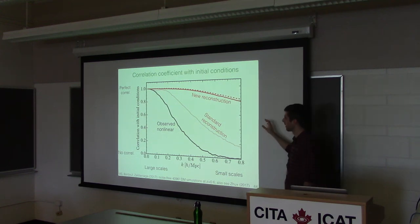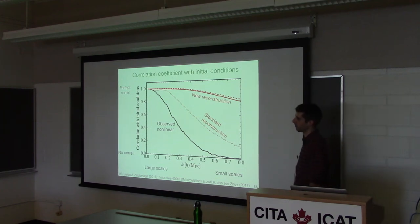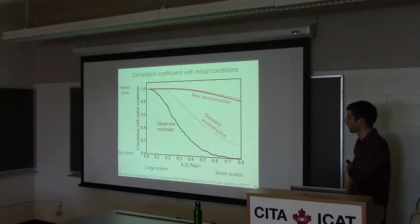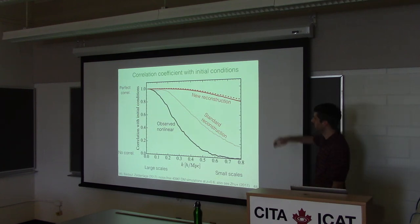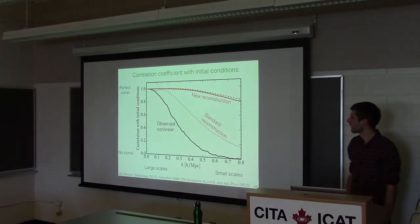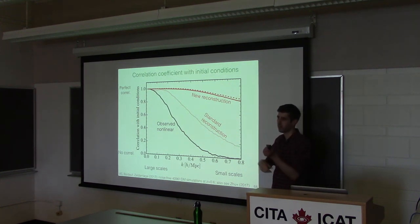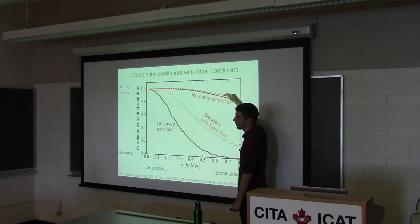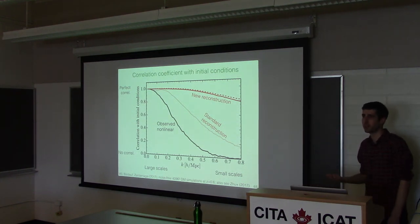Looking at 1 minus the correlation coefficient squared — a measure of the error relative to signal — lower is better. The 2LPT conversion of displacement field to linear density gives the dashed curve, while the Zel'dovich formula gives the solid curve. On large scales the 2LPT gives a big improvement, though with lots of cosmic variance there. This is a different look at the same result. The question of how this compares to the Bayesian forward modeling approach is complex since they work at different redshifts and resolutions, but in general they may do slightly better, though not by as much as hoped.